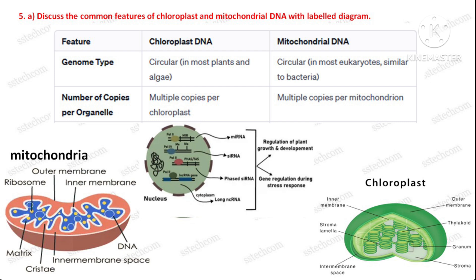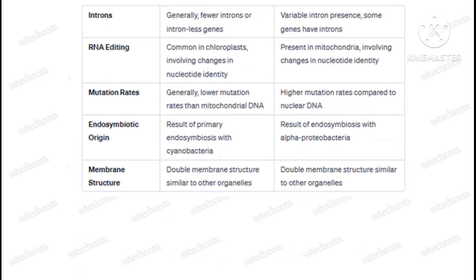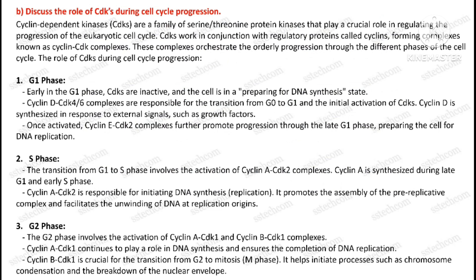Question number five, part A: discuss the common features of chloroplast and mitochondrial DNA with a labeled diagram. The second part of this question is: discuss the role of CDK during cell cycle progression.